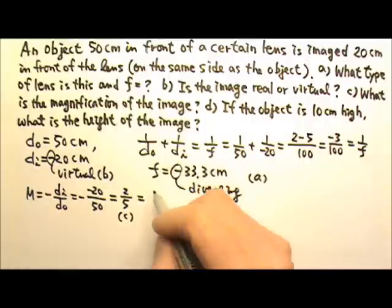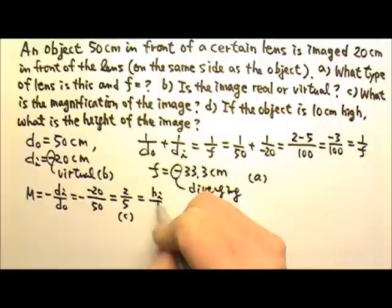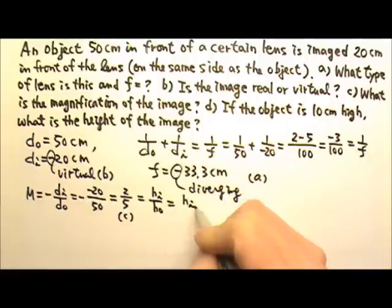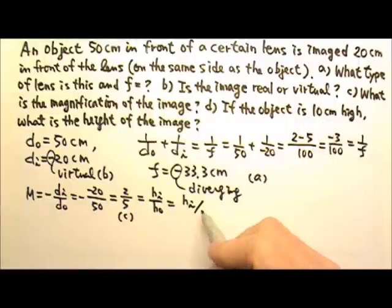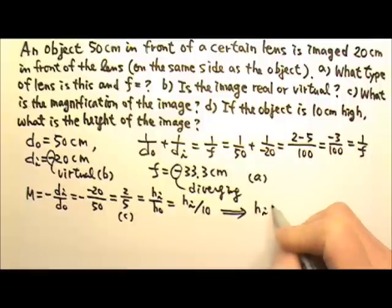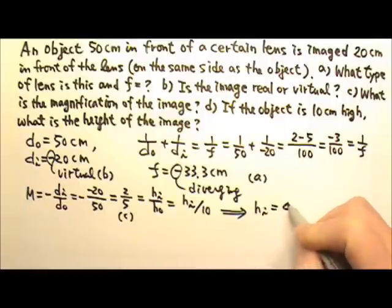For part D, we can use magnification equals HI over HO. And we're looking for the HI, and the HO is the object height 10 cm. Therefore, the HI is 4 cm tall.